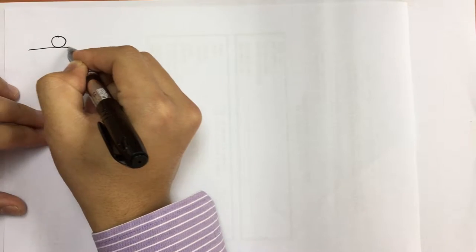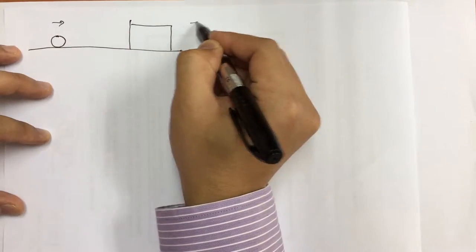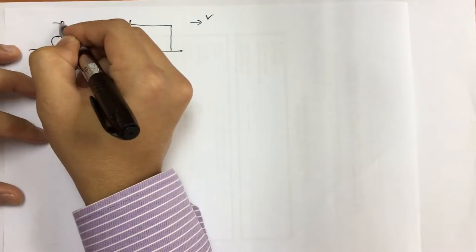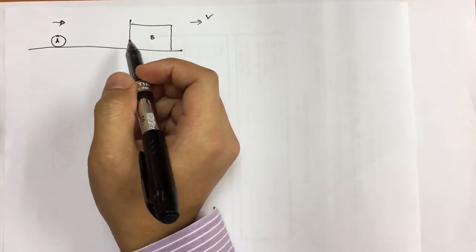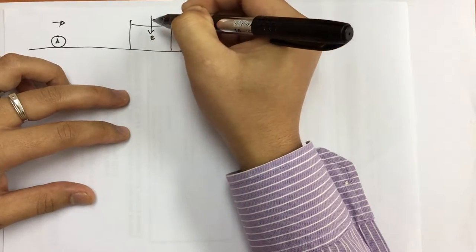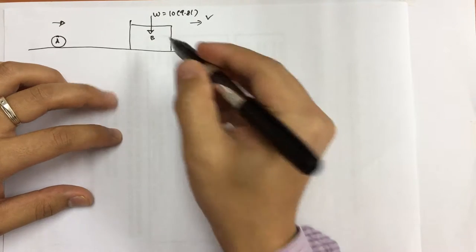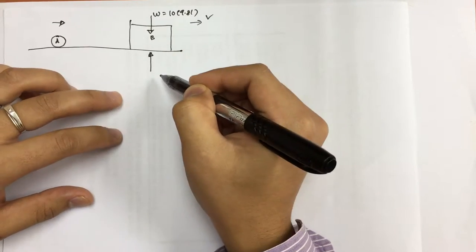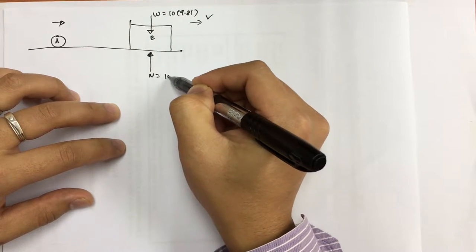As usual, we start by drawing the scenario. We have a one kilogram ball that is going to hit block B. Once the ball hits block B, block B will move in the same direction as ball A, but they do not stay together — this is an impact problem. For block B, the weight is W = 10 × 9.81. Since we have weight, the normal force N equals 10 × 9.81.